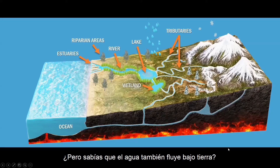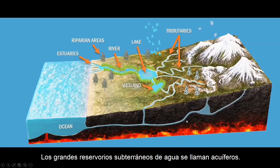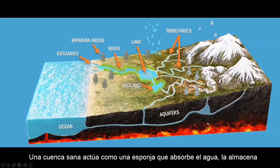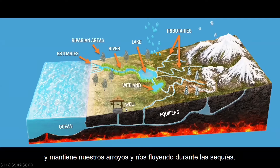But did you know that water also flows underground? This is possible when some of the surface water infiltrates into the ground, becoming groundwater. Large underground reservoirs of groundwater are called aquifers. A healthy watershed acts like a sponge that absorbs water, stores it, and then slowly releases it from the soil during the dry season. Groundwater is what provides water for wells and keeps our streams and rivers flowing during droughts.